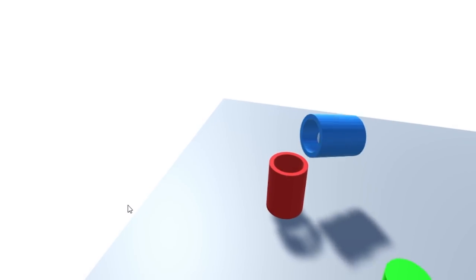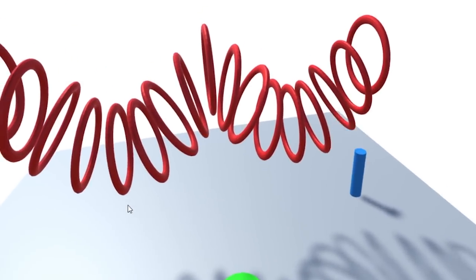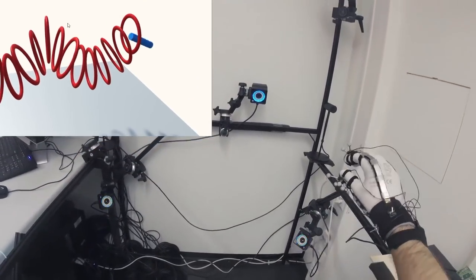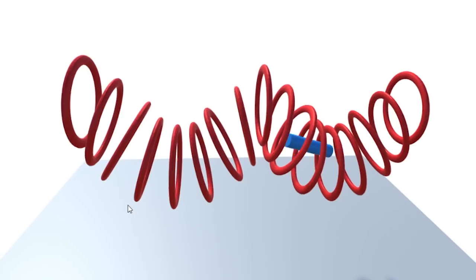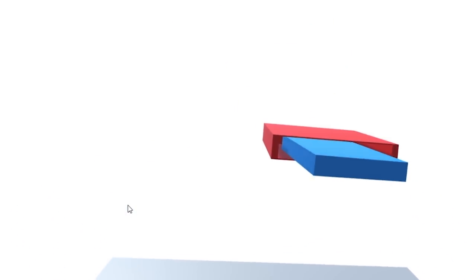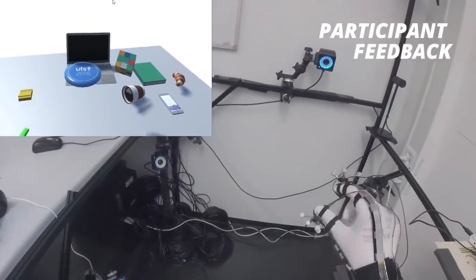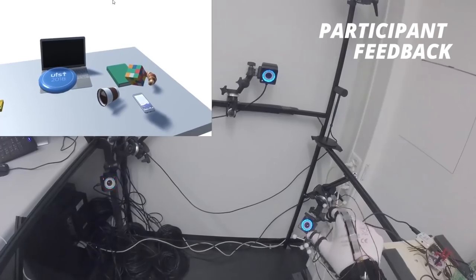The system was tested by our partners in Zurich on several volunteers. They were asked to perform virtual reality manipulation and grasping tasks that required a high level of precision. The results were extremely promising. Users reported feeling very accurate sensations of touching objects and were very accurate in the tasks they were assigned.